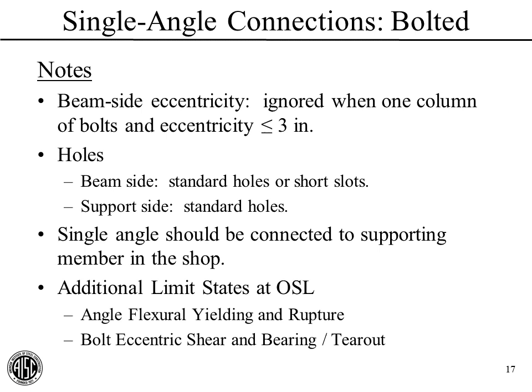Some notes: on the beam side, the eccentricity is ignored, assuming we have one column of bolts and the eccentricity does not exceed three inches—a similar recommendation as for double-angle connections. The holes on the beam side can use standard holes or short slots. On the support side, we need standard holes because we can't have the angle rotating to bring them into bearing. Typically, the single angle should be connected to the supporting member in the shop to make erection easier. We also have additional limit states: angle flexural yielding, angle flexural rupture on the outstanding leg, and bolt eccentric shear, bearing, and tear-out on that outstanding leg.